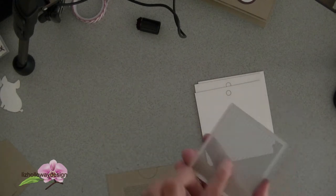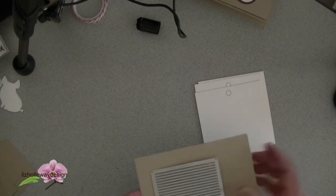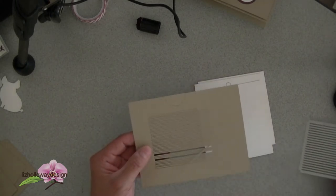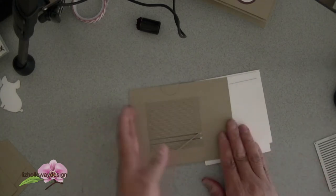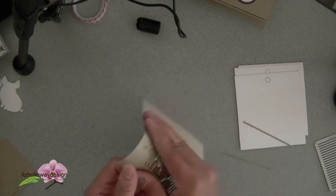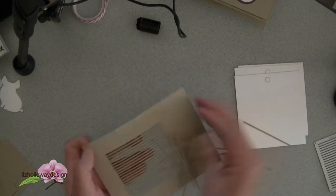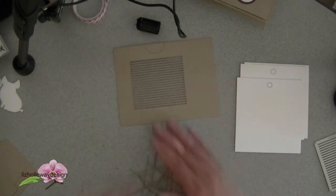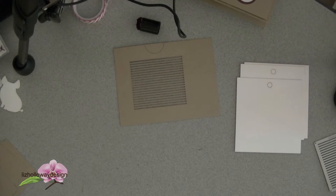When laying your grid die down, position it onto the panel as well as the half circle and secure it with your washi tape. Then you're going to run it through your Big Shot and you'll probably need to crank it back and forth two times to get the grid to cut all the way through your cardstock. If it doesn't cut all the way through, add a shim to your die cut and it will eventually cut.